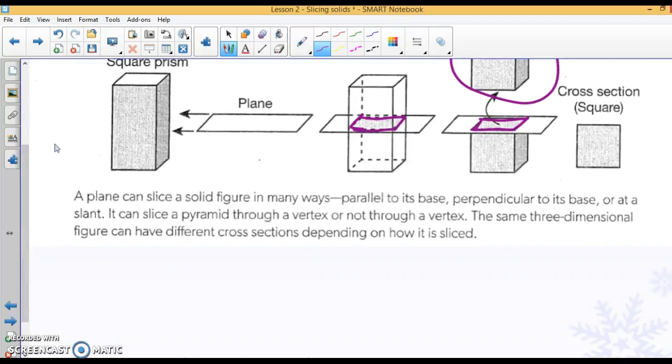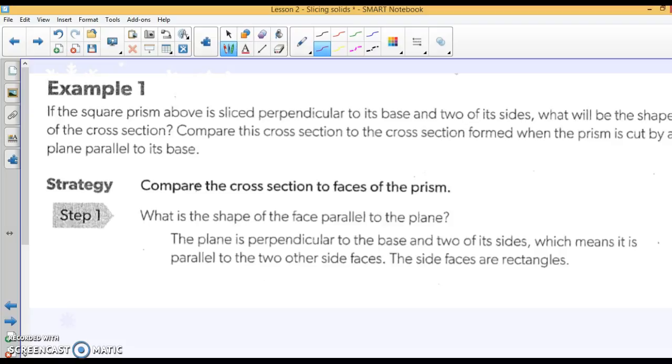When a plane is slicing, it can slice a figure many ways: parallel to its base, perpendicular to its base, or at a slant. It can slice a pyramid through the vertex or not through a vertex. The same three-dimensional figure can have different cross-sections depending on how it is sliced.